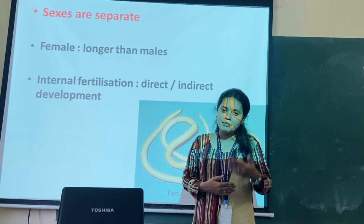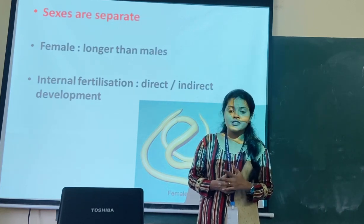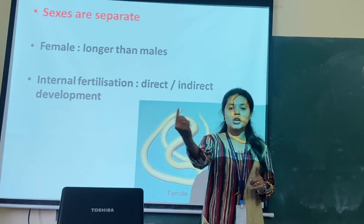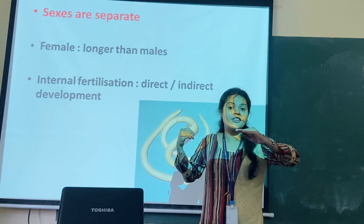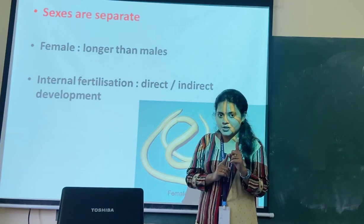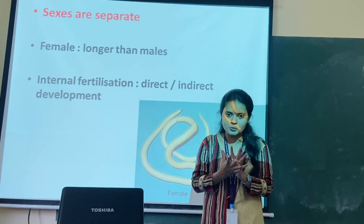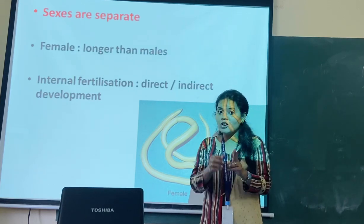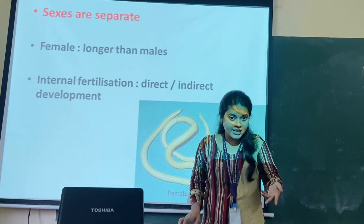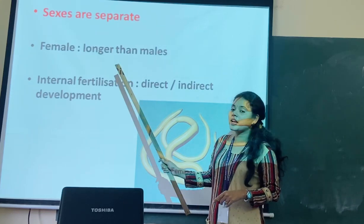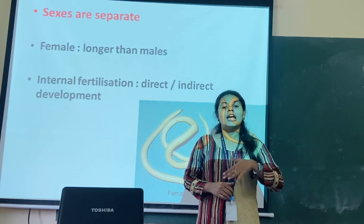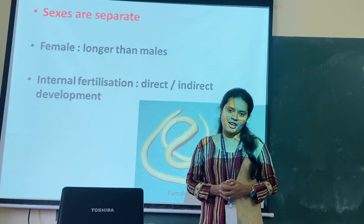So this is all about phylum Aschelminthes. They are commonly called roundworms because the transverse section gives a circular outline. They have developed organ system level of organization, they are pseudocoelomate animals without a perfect coelom. They have a complete digestive system with mouth, anus, and muscular pharynx. Sexes are separate and sexual dimorphism is seen. In the next video session we will discuss the next important phylum. Thank you everyone.